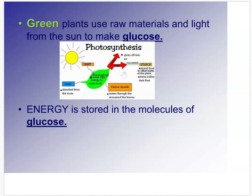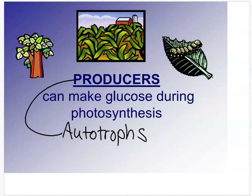That energy is called glucose. Producers can make their own food — a tree, corn, any green plant — they make their own glucose during photosynthesis. Producers are also called autotrophs, a higher-level term you'll learn about later. Remember: producers make their own glucose during photosynthesis.